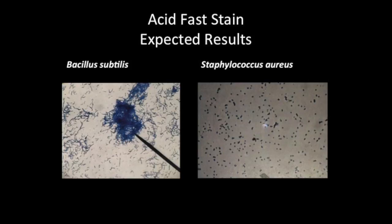You are not provided with a Streptococcus pneumoniae image in this video. What you should expect to see in the lab is coccus-shaped cells that are methylene blue following the staining procedure, indicating that the bacteria is non-acid-fast.